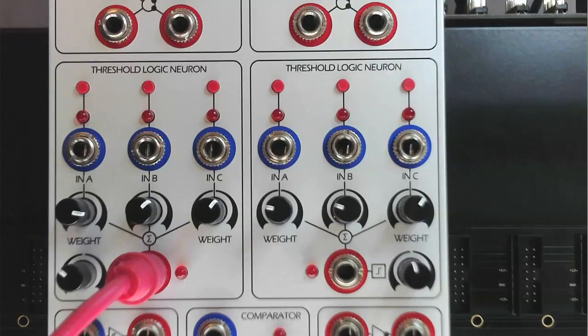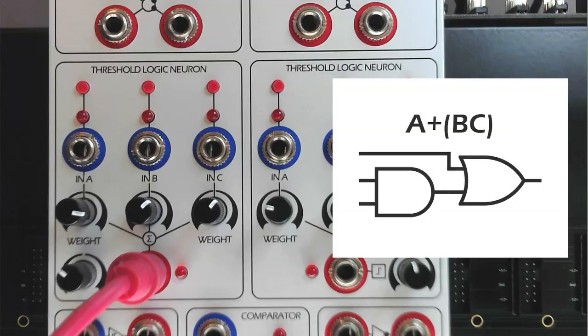The threshold logic neurons can be programmed to perform a great number of Boolean logic functions. Let's first look at the Boolean expression A or B and C. To perform this, we need to consider the interaction of the summed inputs versus the threshold level we will set.